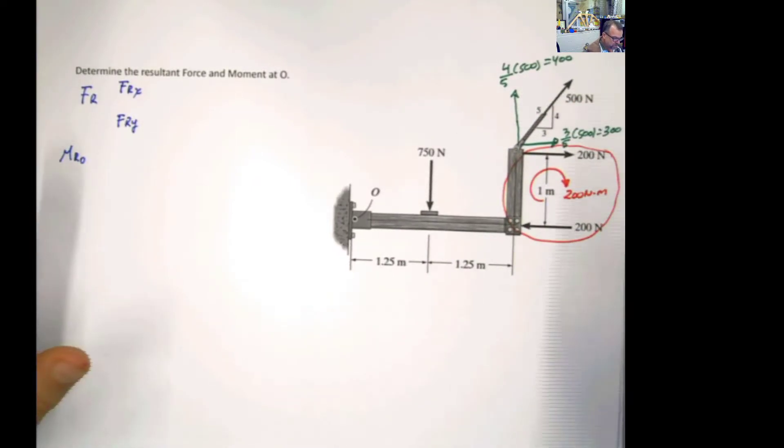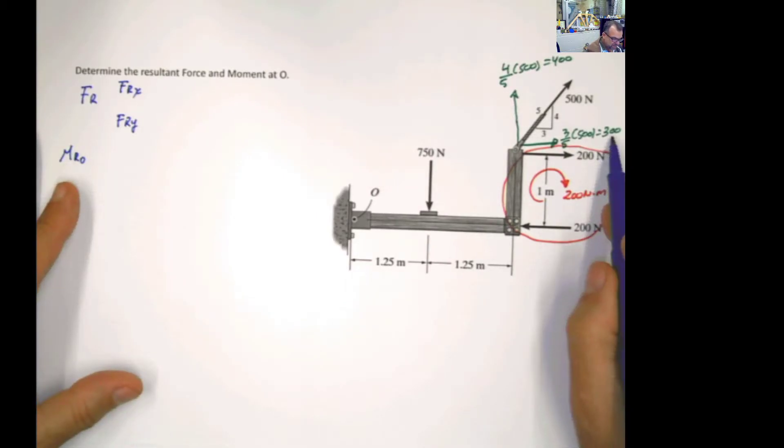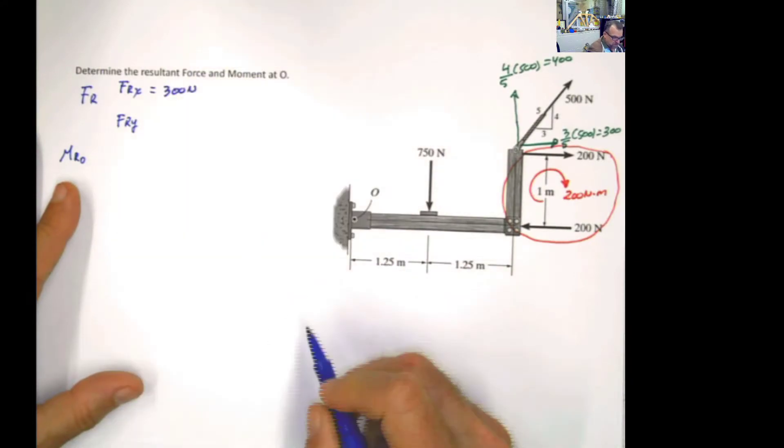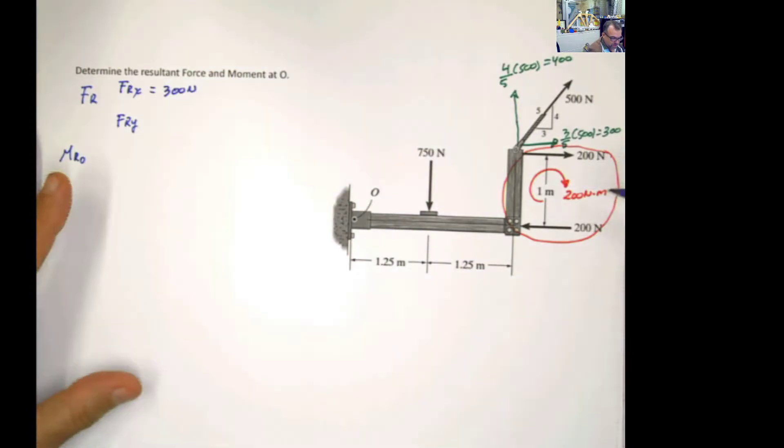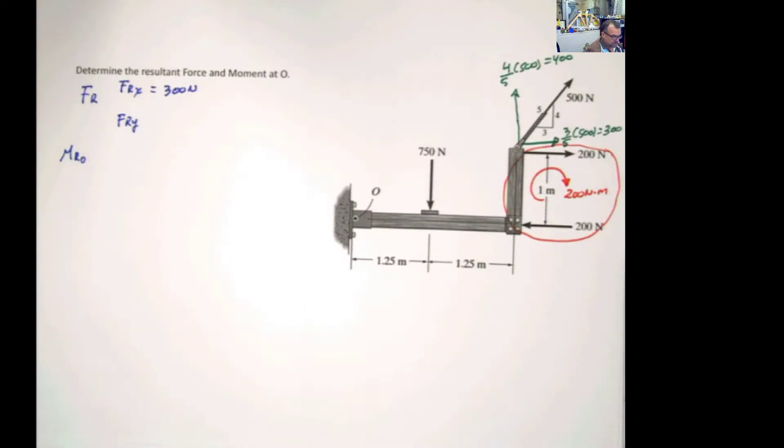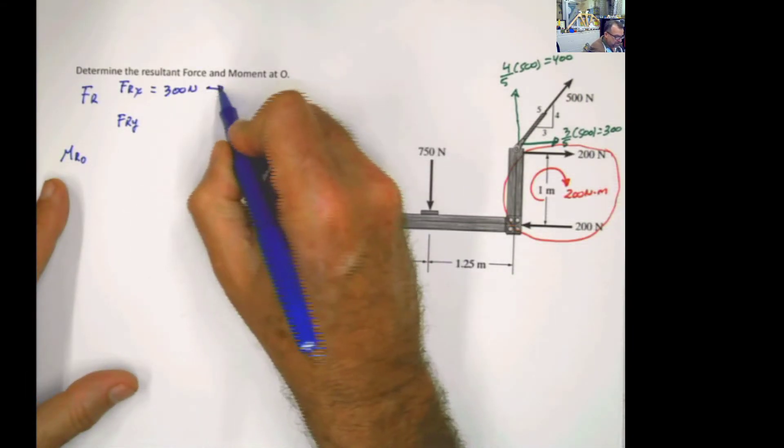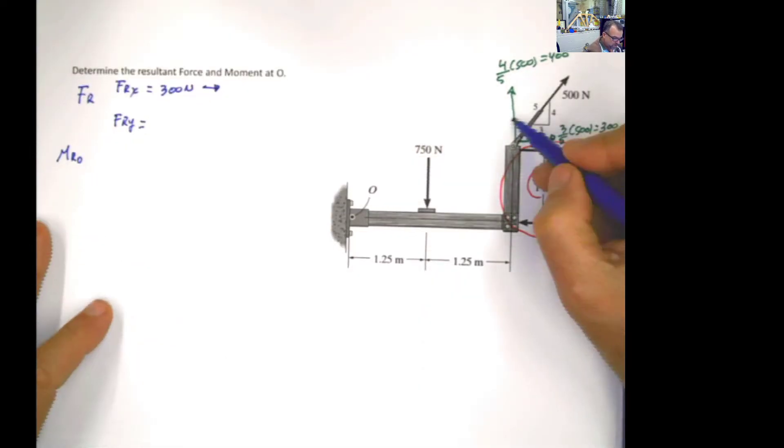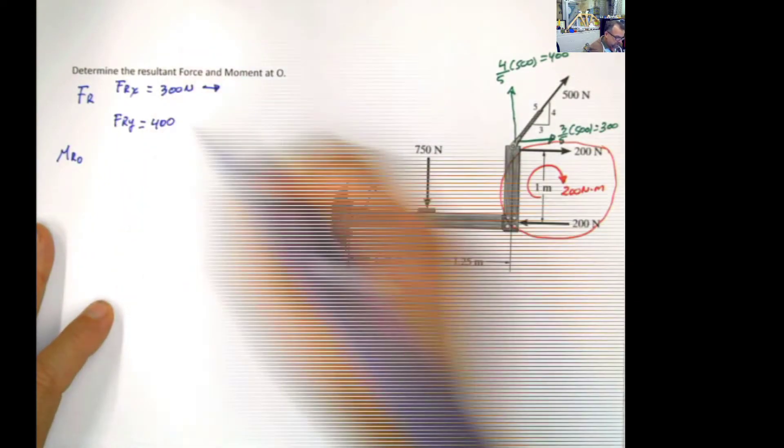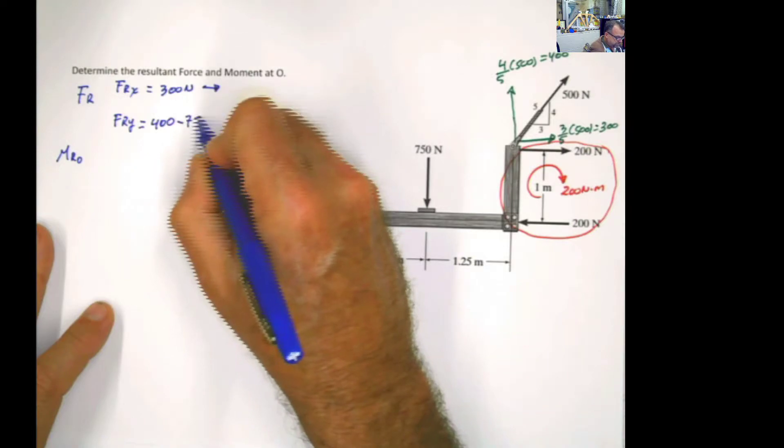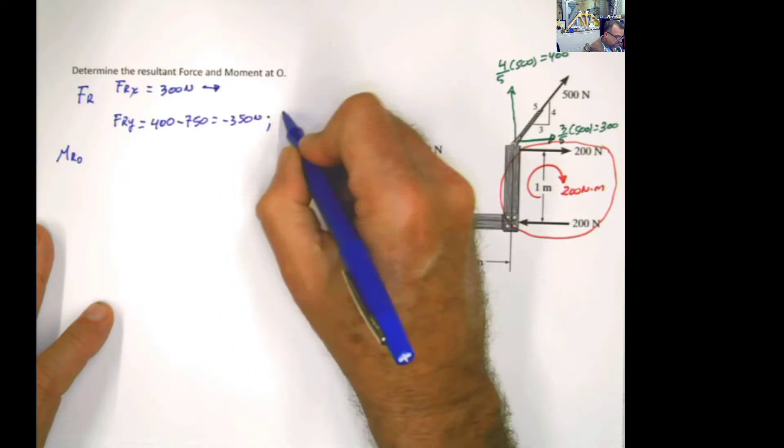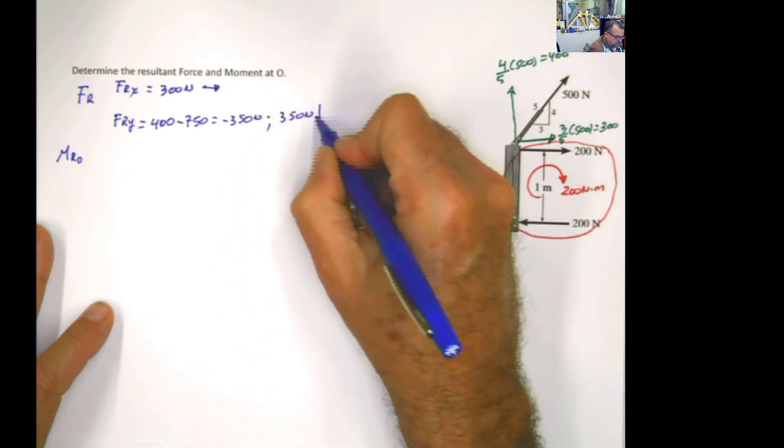Now, we are ready to do the summation of forces in x. If we do summation of forces in x, I have this force here, 300 newton. And I already told you, these two forces cancel each other. Even if you don't realize that, you're going to put 200 minus 200. So they are going to cancel in this summation. So my resultant force is just going to be that one in x. And when you do summation of forces in y, the resultant force in y will be this one, 400, minus this one, which will be negative 350 newton. Or you can say 350 newton acting in this direction.